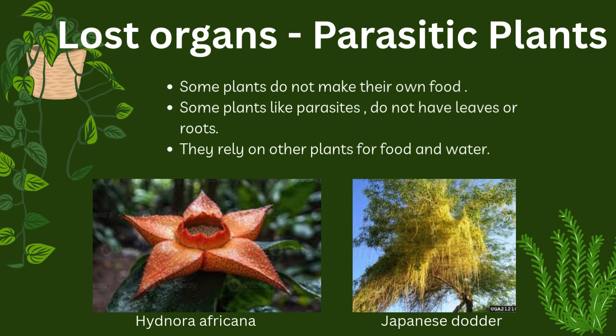In this slide we will discuss plants which are parasitic in nature — meaning not all plants can make their own food. Some plants, like Japanese dodder and Hydnora africana, are examples of parasitic plants. Japanese dodder doesn't need leaves; instead it steals food and water from other plants using special suckers. This shows that plants can survive in many different ways.